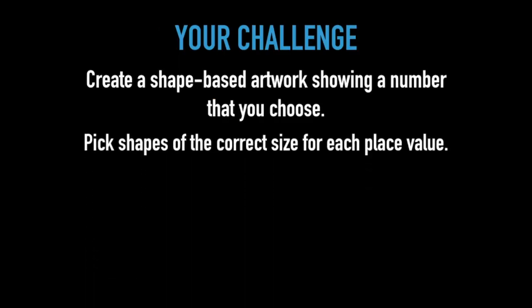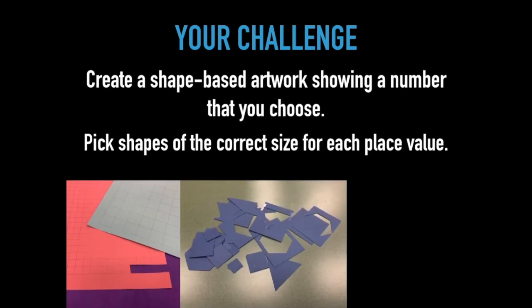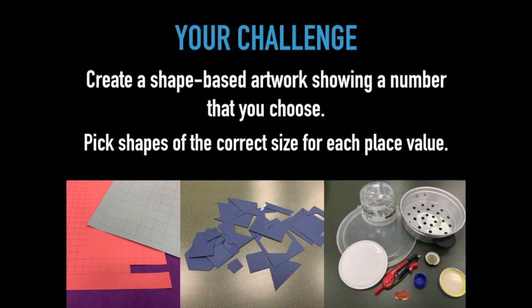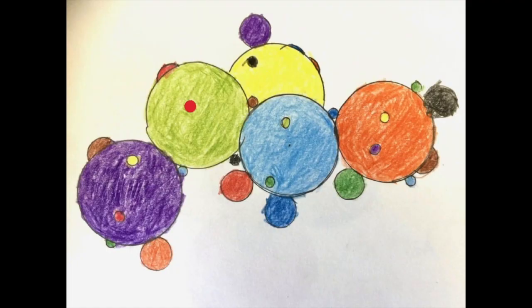Your challenge is to create a shape-based artwork that shows a number that you get to choose, based on the requirements and materials your teacher suggests. I have a few examples showing different materials. This example shows the number 125, using opaque paper collage, vertical and horizontal symmetry.